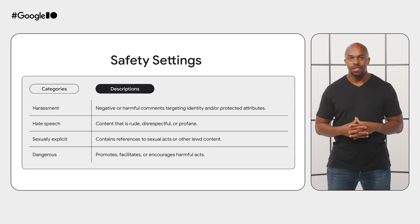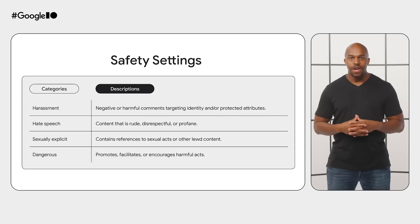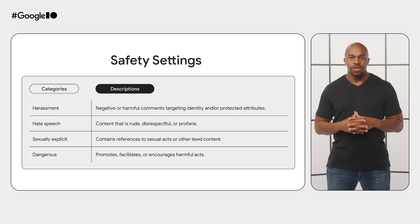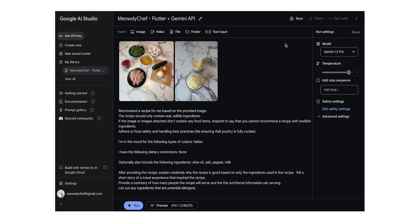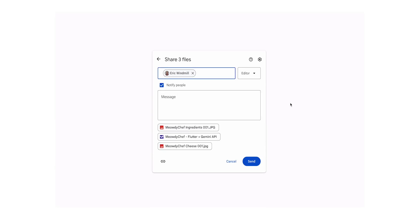Additionally, there are adjustable safety parameters for the Gemini API, such as for harassment or dangerous content. After reading up on each, I found that the default settings for these safety parameters were suitable for our app. We will continue to test and monitor for safety problems throughout the lifecycle of the app. This is the initial prompt I came up with for the app. Now, I can save it and share it with Eric using the Share feature in Google AI Studio, so he can add the prompt to the Flutter app.